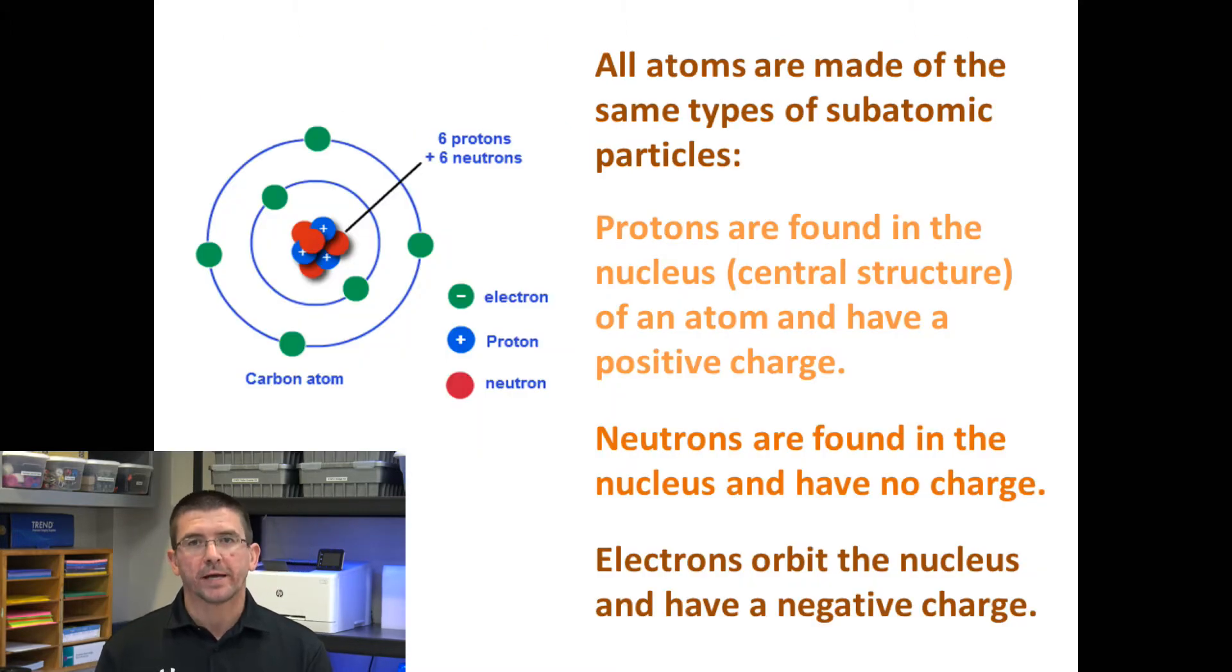Whatever type of atom we have, all atoms are made up of the same basic subatomic particles. In the center of the atom is a group of subatomic particles called the nucleus. It's made of protons, which are positively charged particles, and neutrons, which are neutrally charged particles that have no charge. So in the center of the atom, you have neutrally charged and positively charged particles.